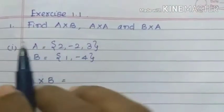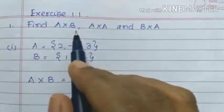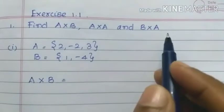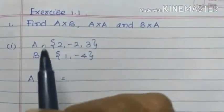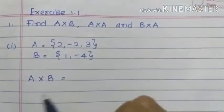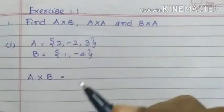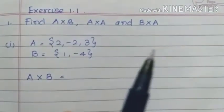Exercise 1.1 of a sum. Find A cross B, A cross A, and B cross A. If you look for examples, you can see this sample correctly.